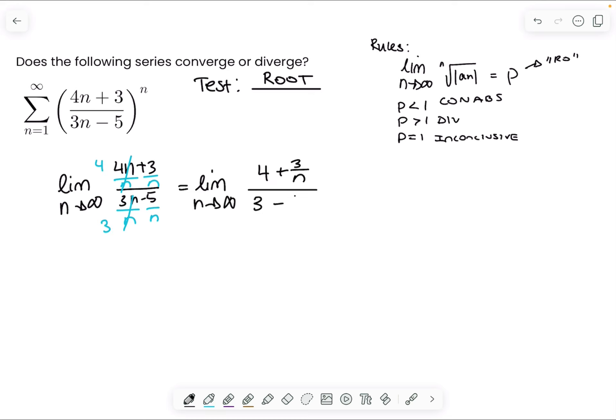That becomes 4 over 3. If you don't have a good number sense, you can literally take 4 divided by 3, you know it has to go in at least one time, so you know it's going to be greater than 1. So because rho is greater than 1, that means that this series diverges.